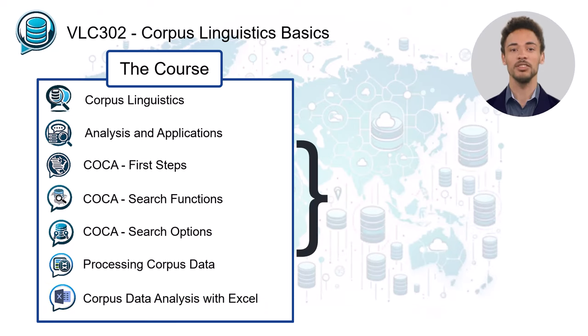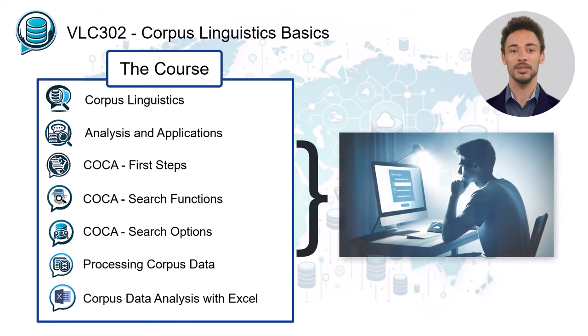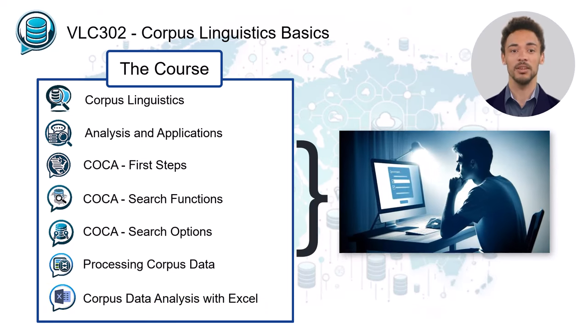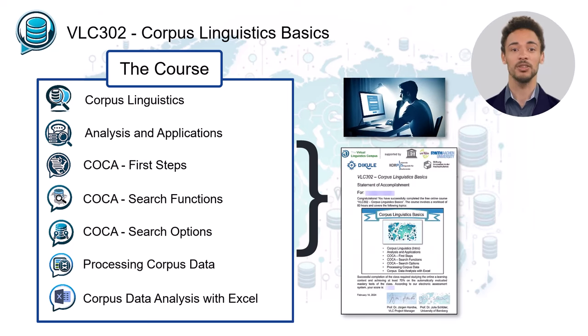All seven units contain a mastery test with 10 questions each. To pass the course and to be awarded the statement of accomplishment, you have to get at least 70% of all questions right.